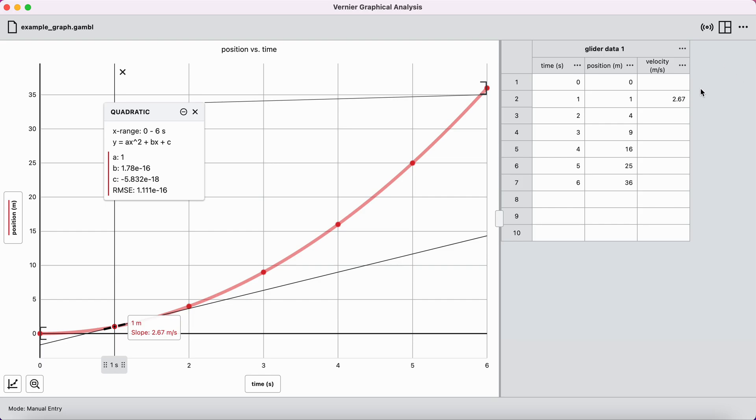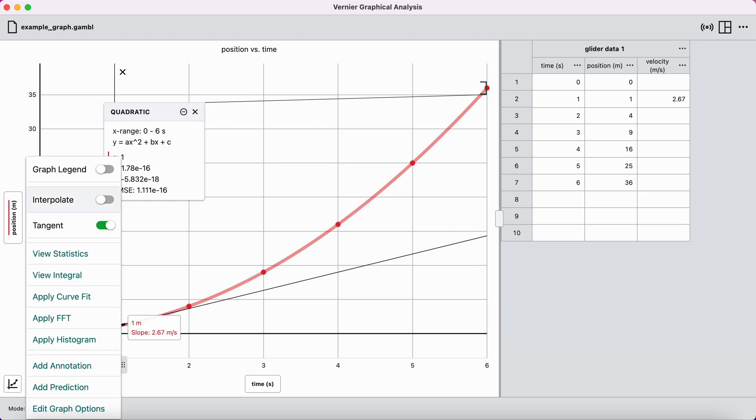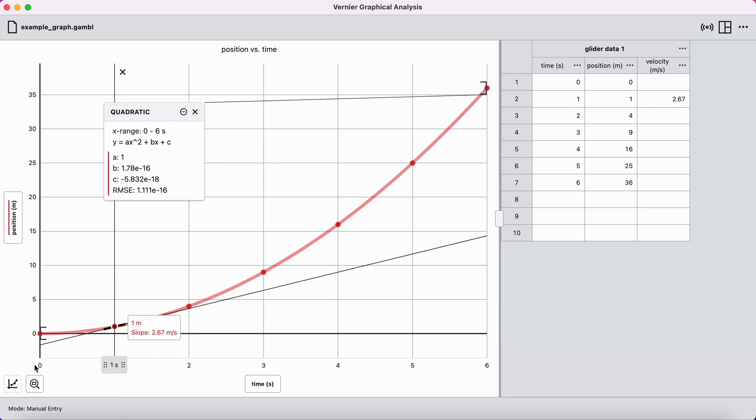So, I now have the velocity, 2.67 meters per second, at time t equals 1 second. I'll remind you again that we got this tangent line just from this menu option and turning the tangent line slider on. Now, from there, we can find tangent lines at other points. You need at least one data point to the left to help compute the tangent. So, we can't get the speed at t equals 0 seconds.